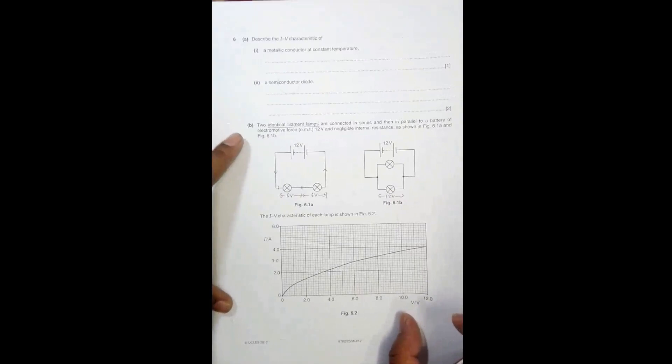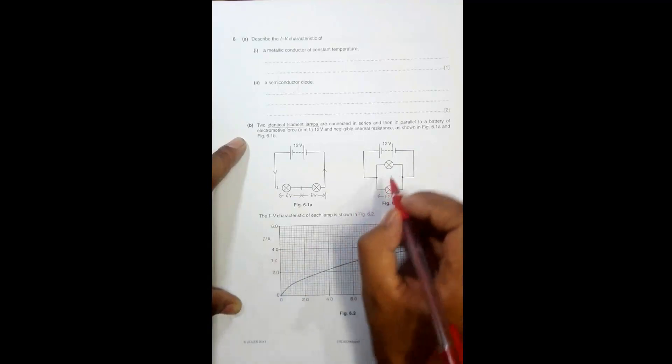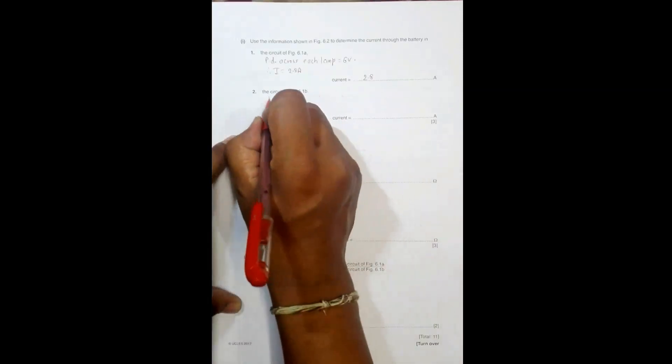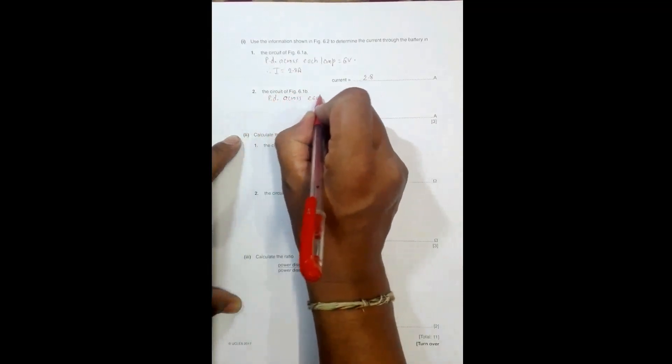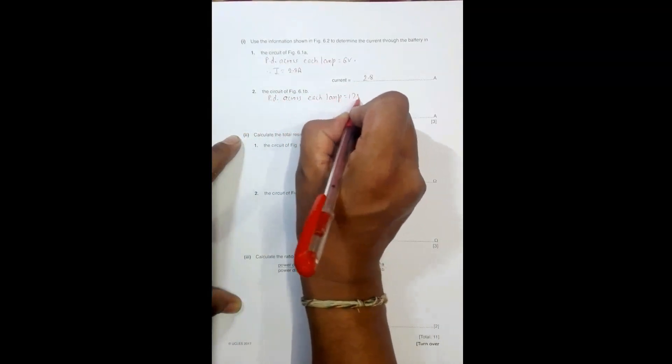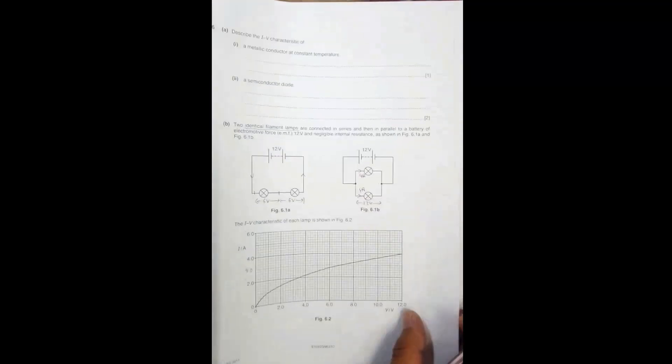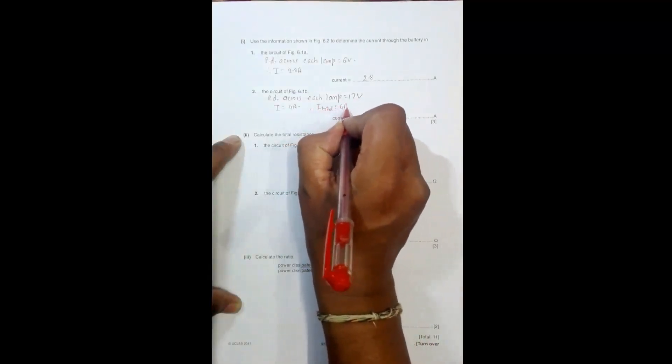In the second circuit, the PD across each lamp is 12 volt where the current is 4 ampere. So here we have 4 ampere and here 4 ampere. PD across each lamp is 12 volt, therefore current is 4 ampere. Now the current through the battery is the sum of these two currents, so total should be 4 ampere plus 4 ampere equals 8 ampere.